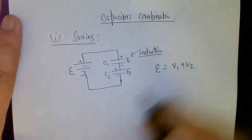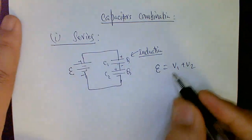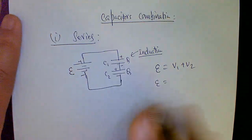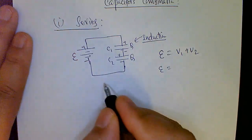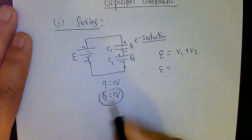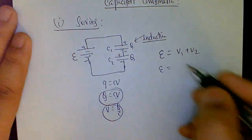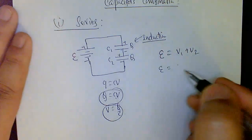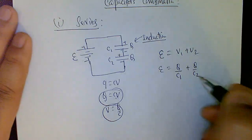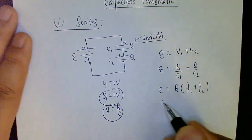From Kirchhoff's Voltage Law, the total voltage equals the sum of voltages across the capacitors: E = V1 + V2. Since Q = CV means V = Q/C, and charge Q is the same for both capacitors, we get E = Q/C1 + Q/C2 = Q(1/C1 + 1/C2). Dividing both sides by Q gives E/Q = 1/C1 + 1/C2.